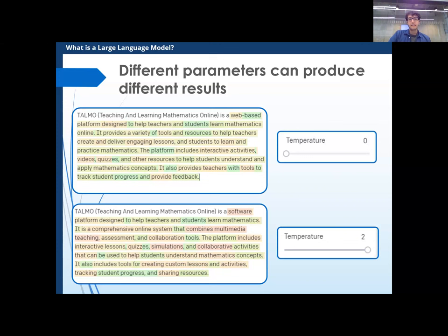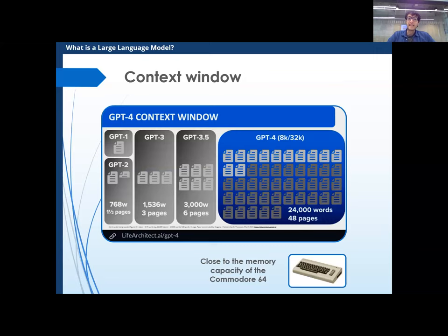An important feature is the context window — how many tokens can it handle before it starts deleting them. ChatGPT 3.5, the freely available one, has a context of about 3,000 tokens, which is roughly six pages of content. This is why you cannot write a novel: by the time it's writing chapter three, it's forgotten chapter one. GPT-4, the premium version, can handle 8,000. In the developer preview it's 32k, which is the biggest so far — and just to put that in perspective, 32,000 tokens is about the memory capacity of the Commodore 64. We are a bit at that stage of the technology.